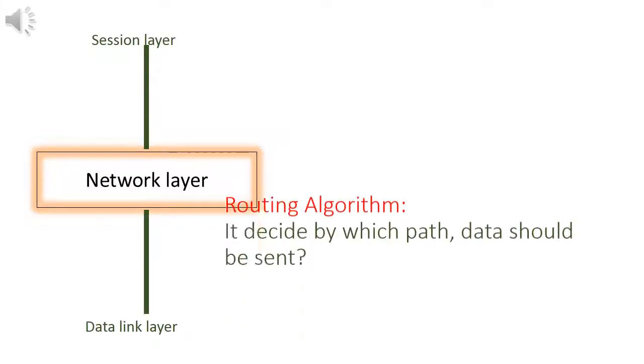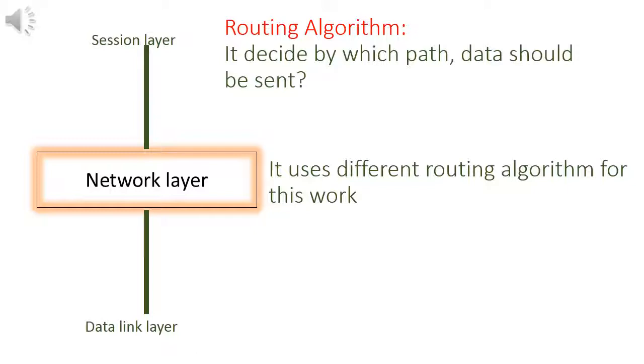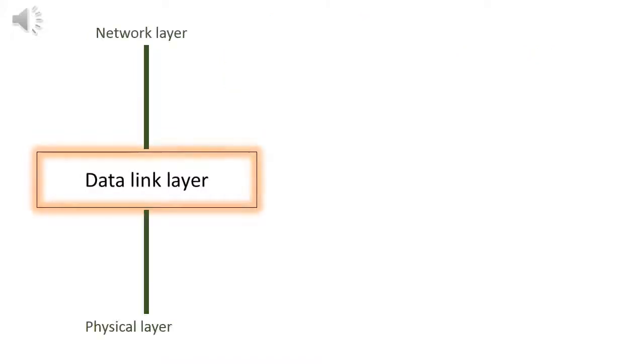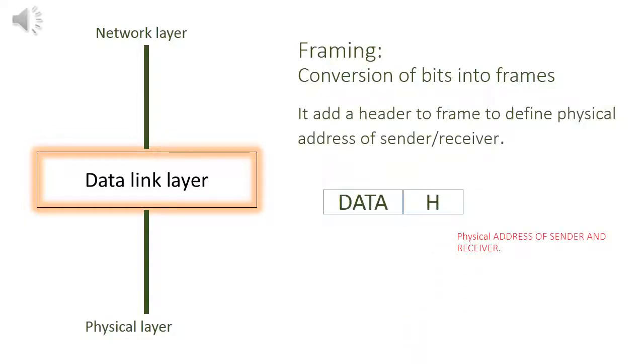The function of data link layer is routing. There are various routes through which data can be sent. Data link layer decides through which path data should be sent. The other function of data link layer is to convert bits into frames. This process is called framing. It adds a header to data frame. This header defines the physical address of sender and receiver. It does the function of flow control and error control also.